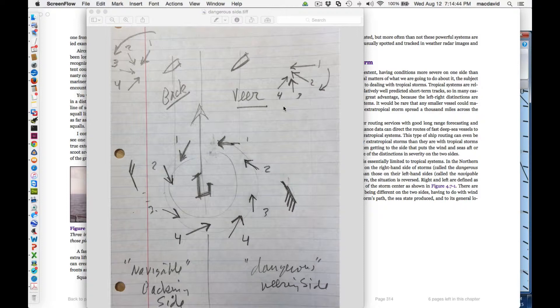Now, on the other hand, you look at wind one, wind two, wind three, wind four, that on the so-called navigable side, the wind is doing the opposite. It's starting here. This wind is one, this wind is two, and so forth. So the wind is backing. So on this side of the storm, if you're on this side of the path of the circular low going by, the wind will be backing.